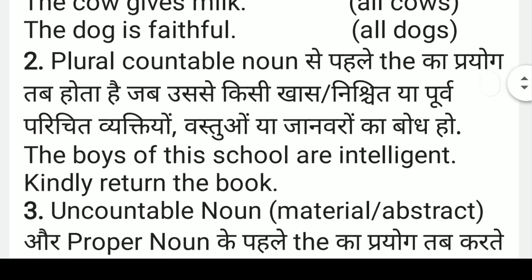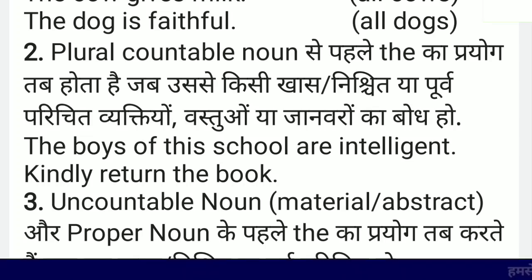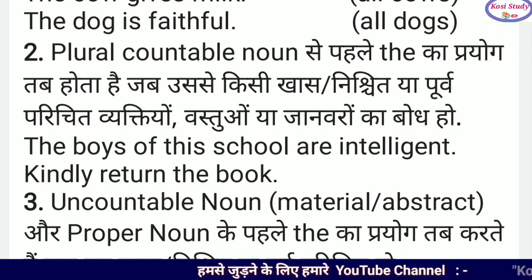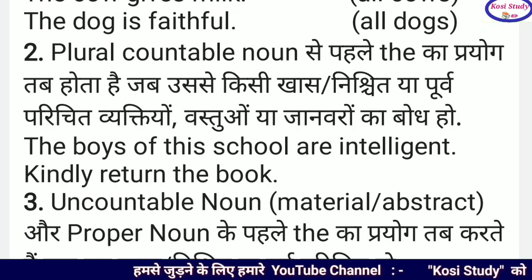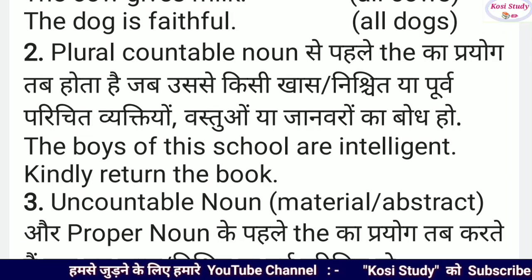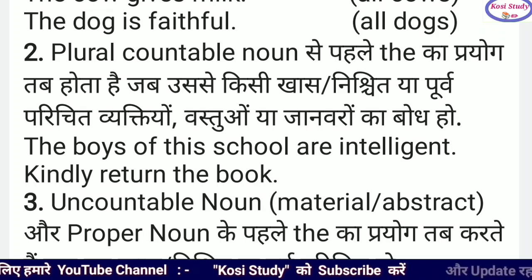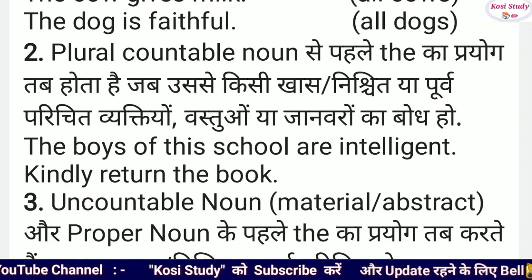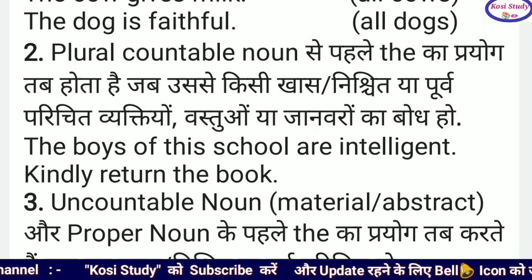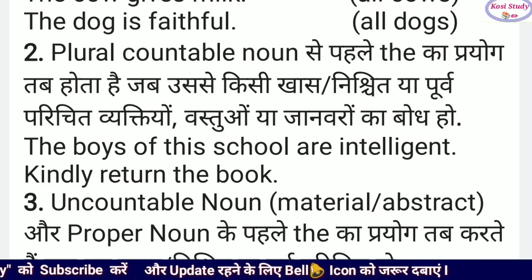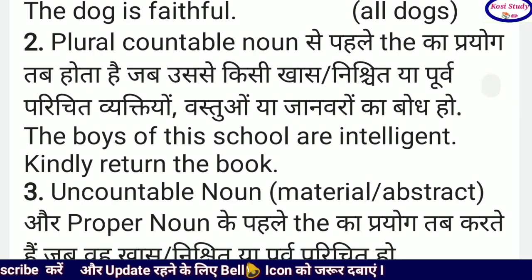दूसरा rule है: Plural countable noun से पहले 'the' का प्रयोग तब होता है जब उससे किसी खास, निश्चित या पूर्व परिचित व्यक्ति, वस्तु अथवा जानवरों का बोध हो। यानि plural countable noun से पहले 'the' का प्रयोग नहीं होता, लेकिन जब किसी खास, निश्चित या पूर्व परिचित व्यक्ति, वस्तु या जानवरों का बोध कराना हो तो उससे पहले 'the' का प्रयोग किया जाता है। जैसे, 'The words of this school are intelligent' — इस school के बच्चे तेज हैं। यानि जो भी इस school में पढ़ने वाले बच्चे हैं, वो खास हैं, निश्चित हैं — कुछ ही बच्चों की बात हो रही है, दुनिया के सारे बच्चों की बात नहीं हो रही है।